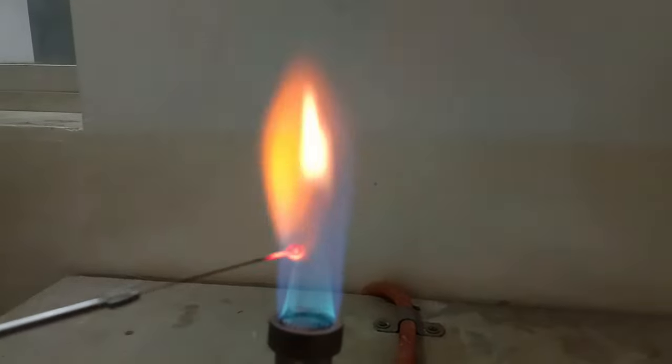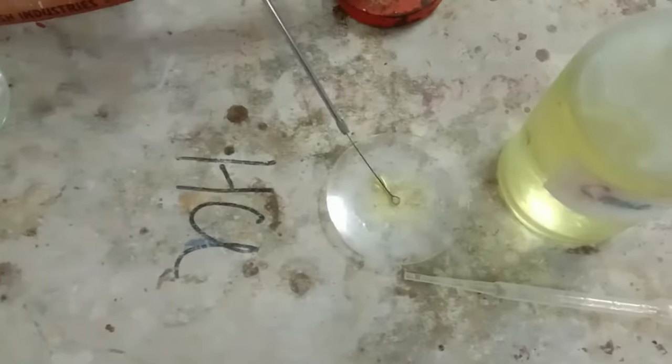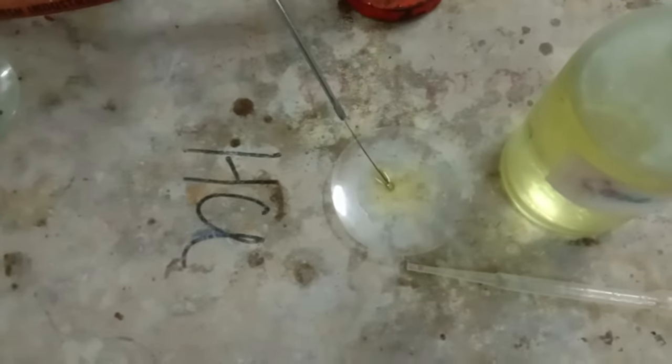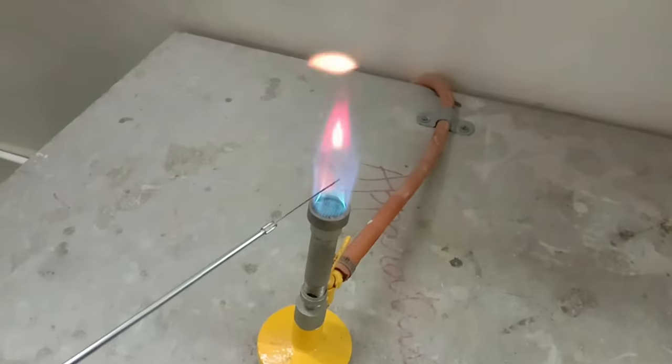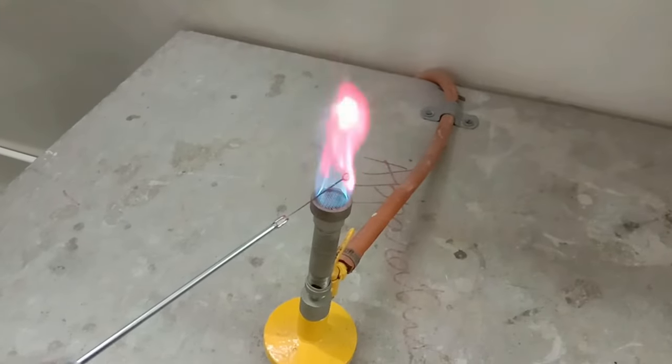After the completion of this procedure, dip the Nichrome Loop holder in the concentrated hydrochloric acid and heat it again over the Bunsen's burner till you get the yellow flame which ensures the loop holder is clean and set for the next flame test.